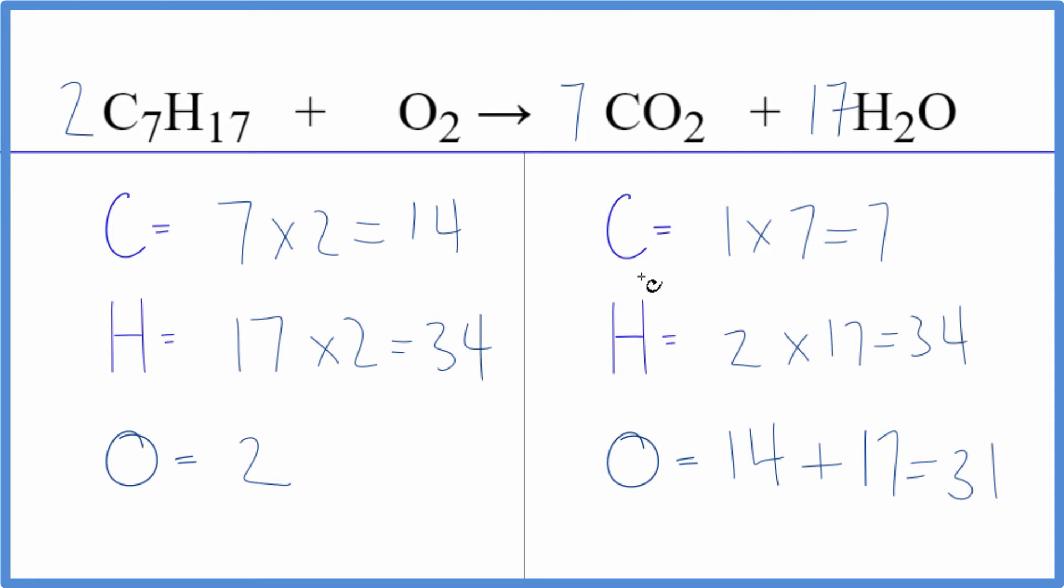It looks like we also need to balance the carbon again. So if I want to get 14 carbons here, what I'll need to do is change this seven to 14. So now I have the 14 carbons and the one times 14, that'll give me 14 of those. So the carbons are balanced.